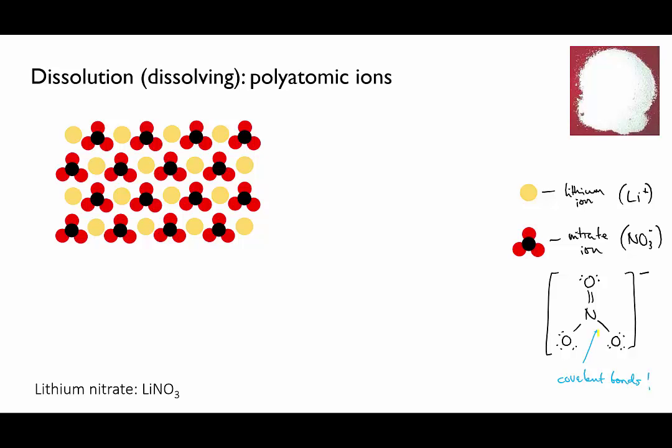So lithium nitrate, like any ionic compound that has a polyatomic ion in it, is a sort of hybrid. Although the bonding between the lithium ions and the nitrate ions is ionic, there is also that covalent bonding within the polyatomic nitrate ions.